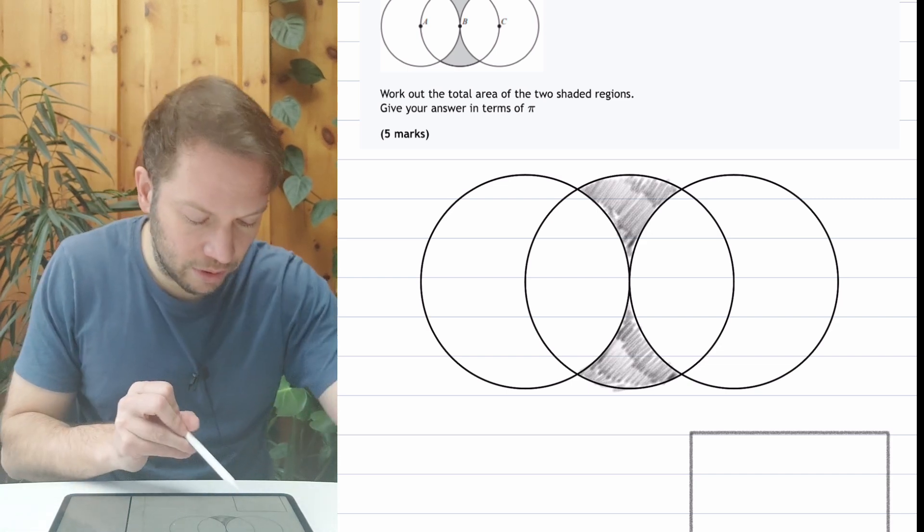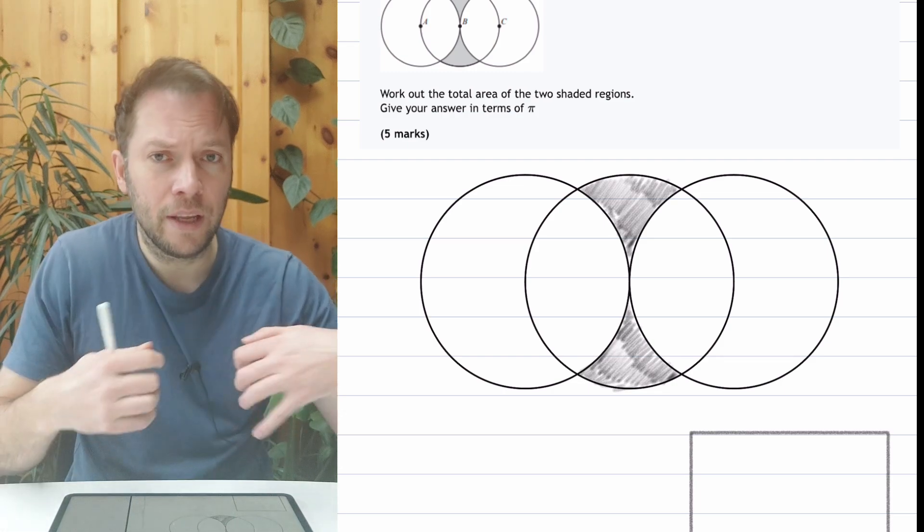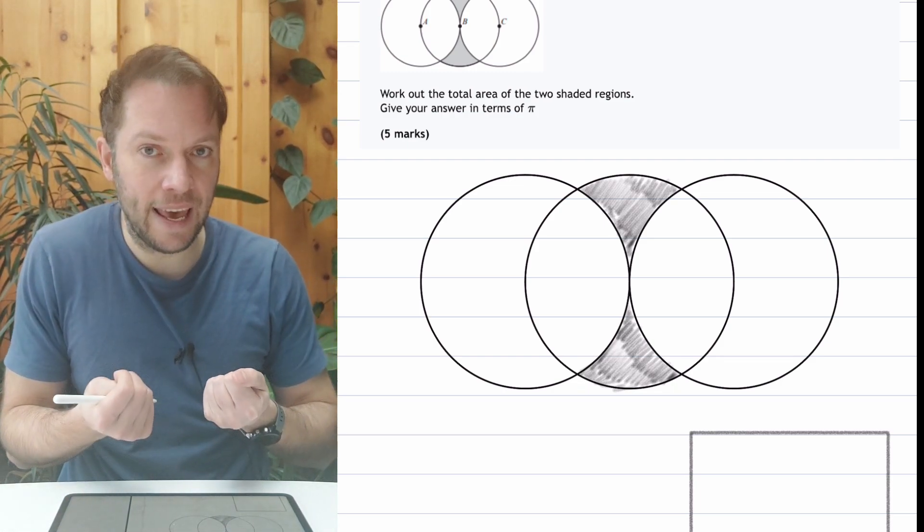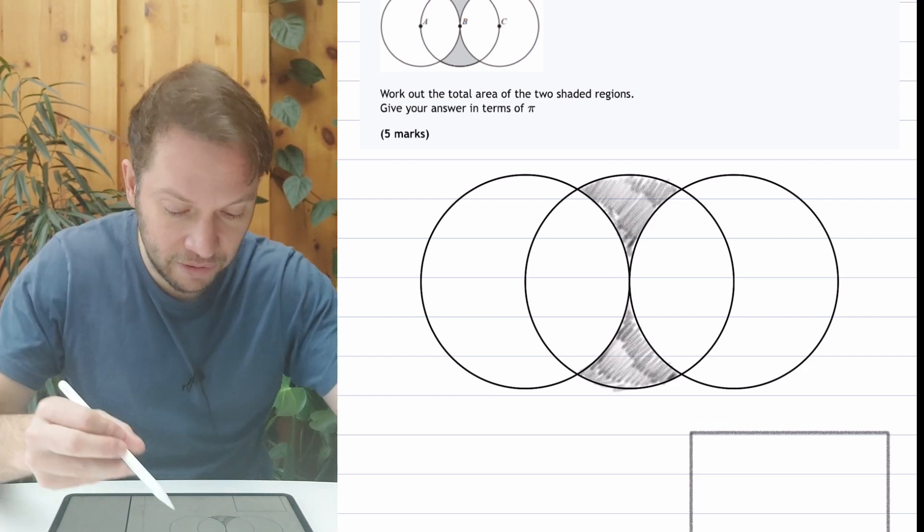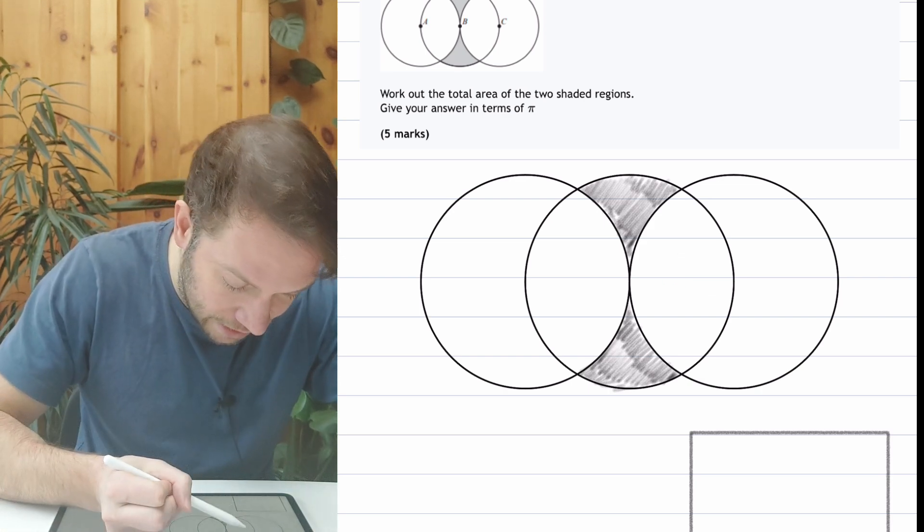But then the question is, how do we find the area of this leafy region on the right, for example? What kind of shape is that? We need to think about how we can compose it into shapes that we know how to find the area of. We know the formulae for the area of those particular shapes. There's various ways of breaking this up, but the way I'm going to do it is to split it in half.